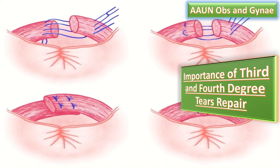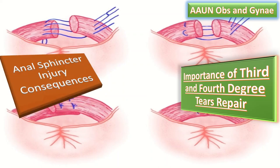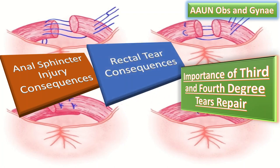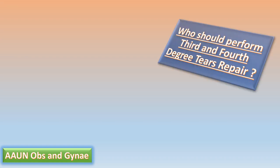First, in case of anal sphincter tear, a woman may suffer loss of control over bowel movements and gas if the torn anal sphincter is not repaired correctly. Secondly, if a tear is in the rectum and that is not repaired, the woman may suffer from infection and rectovaginal fistula.